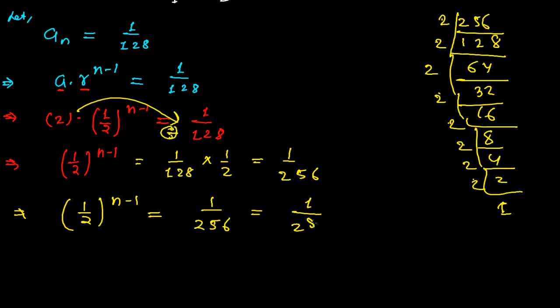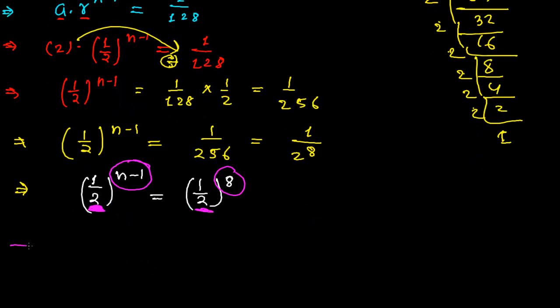So now I can write (1/2)^(n-1) equals (1/2)^8. Because 1 to the power 8 is again 1. See here, the same base has (n-1) power here and the same base has 8 power there, so now I can easily equate that n-1 equals 8.